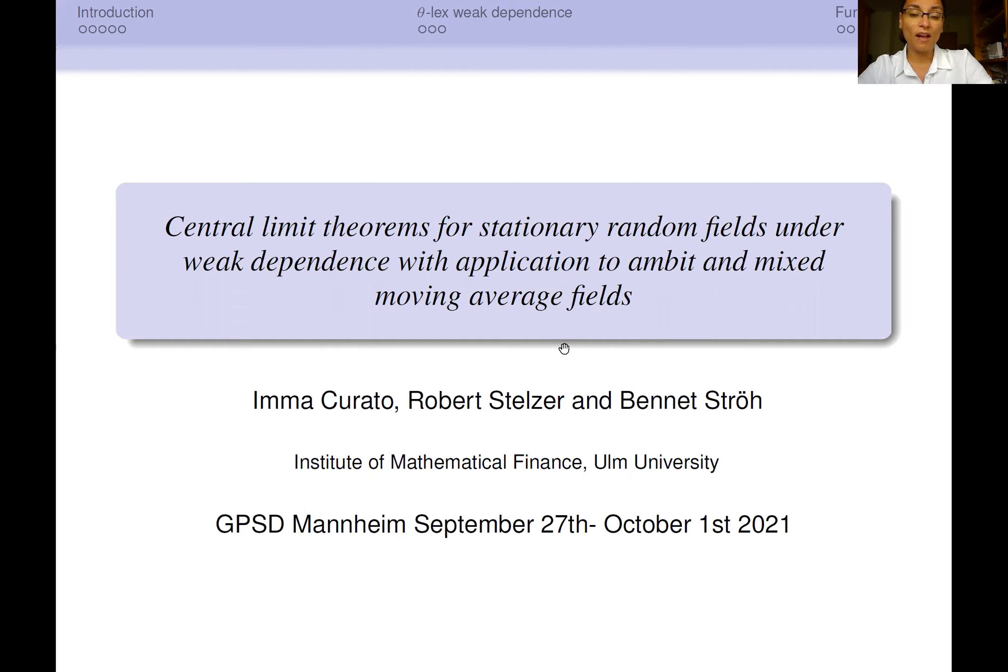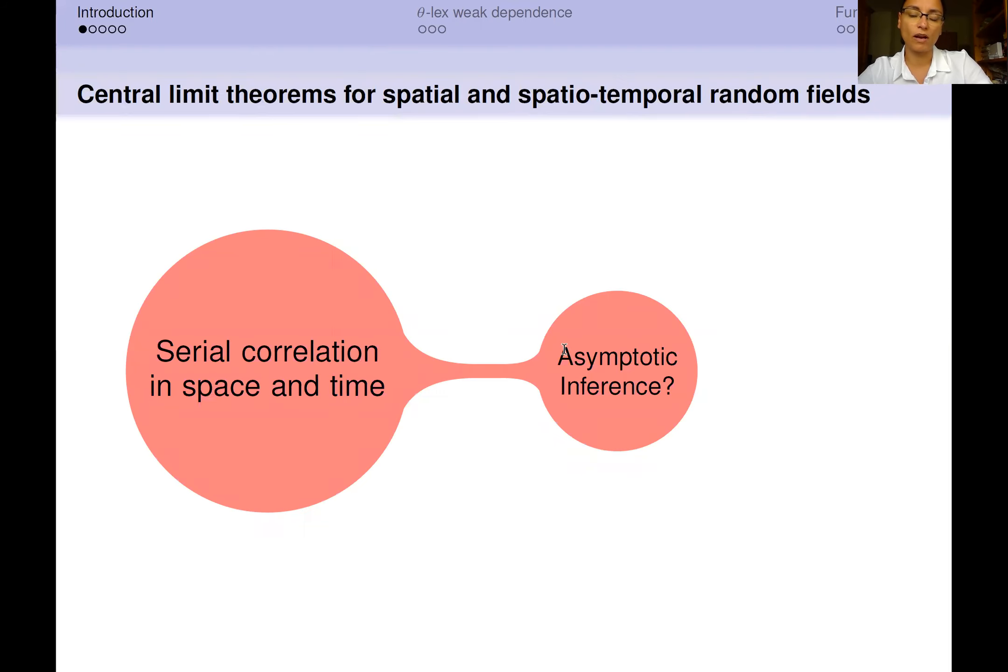This is a paper I developed in collaboration with Robert Stetzer and Ben & Strong. We all work at the Institute of Mathematical Finance at Ulm University. The target of our paper is to develop central limit theorems which enable valid asymptotic inference for spatial and spatiotemporal random fields.